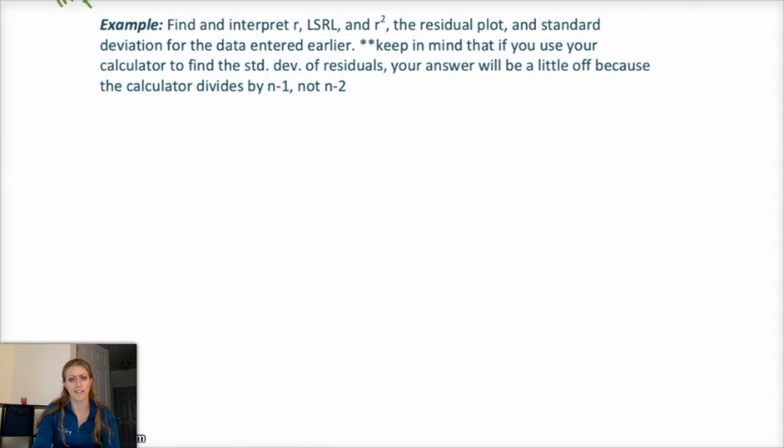Okay, so this is kind of our last example. Let me know if you have questions in class because I know residual r squared coefficient of determination is kind of confusing, but go ahead and try this example. Find and interpret, so remember it has to have context, what r, the LSRL, and r squared, and the residual plot, and the standard deviation of the residuals for the data entered earlier with TV and life expectancy.